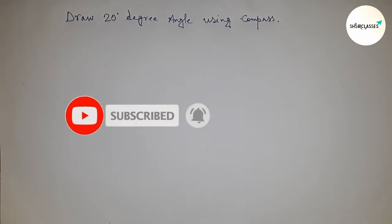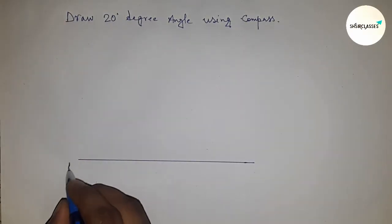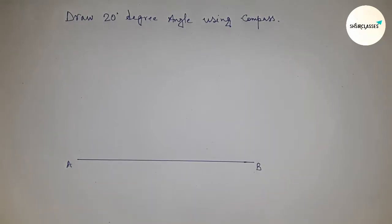Please subscribe to the channel and press the bell icon. So first of all, drawing a line of any length here, and this is line AB. Next, drawing the angle on point A. So putting the compass on point A.